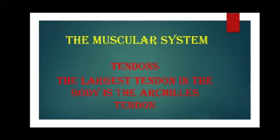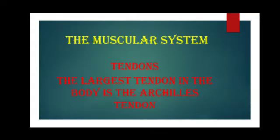What are tendons? Tendons are the tissues which attach the muscles to the bones. This is very important — tendons are the tissues which connect the bones to the muscles. The largest tendon in the body is the Achilles tendon, and it is present in the calf muscles. It connects the calf muscle to the heel bone.